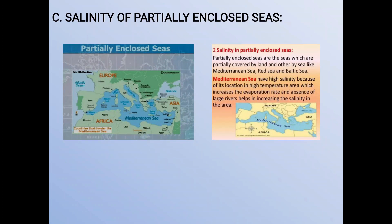The Mediterranean Sea communicates with the Atlantic Ocean through the narrow and shallow Strait of Gibraltar. Near the Strait of Gibraltar, its salinity is less — that is 36.5 percent — but increases towards the east, and near the Syrian coast it is more than 39 percent. As compared with the large size of this sea, very few rivers join it. The rate of evaporation is more as it lies near the Tropic of Cancer, and hence its salinity is more.